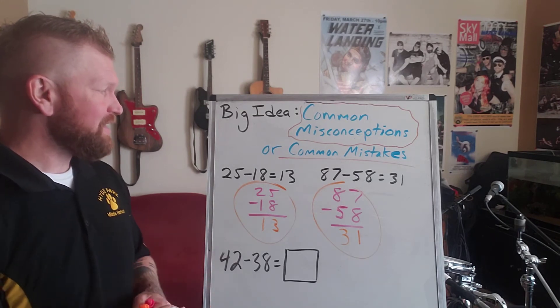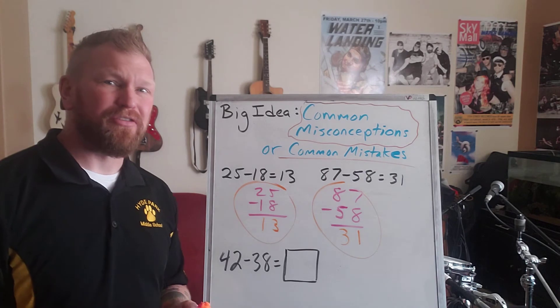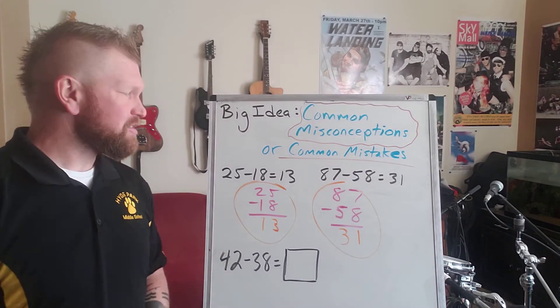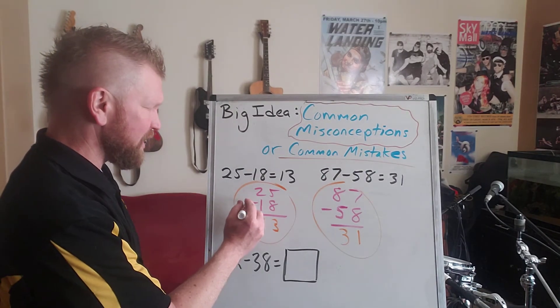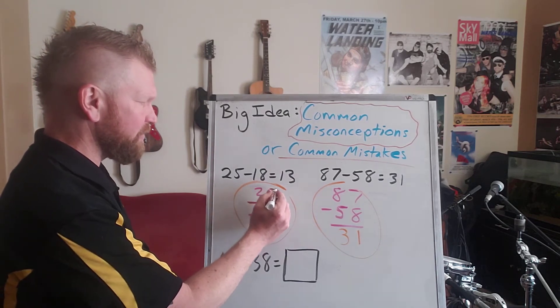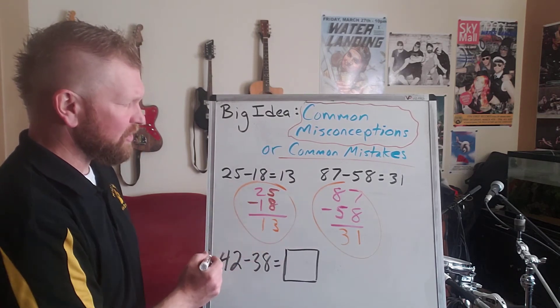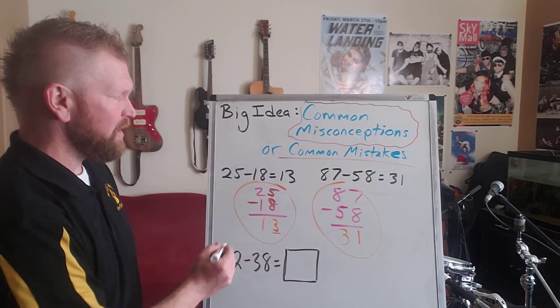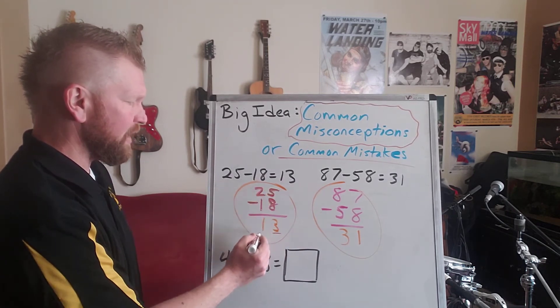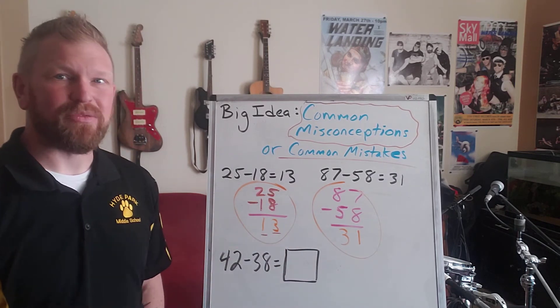All right, so if you identified that this student, maybe they're not proficient at regrouping or borrowing, so maybe they just see the subtraction sign. And so they're thinking, well, if I subtract 5 from 8, 8 minus 5 is 3. And then if I subtract 2 minus 1, well, that equals 1. That's exactly what's happening.